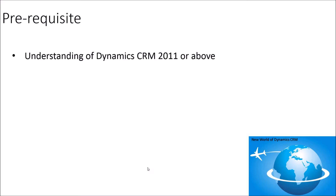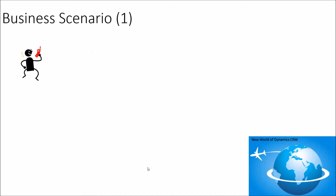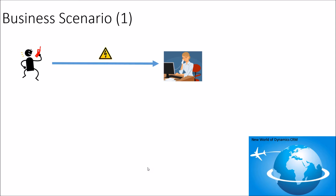Let's start with some business scenarios. In scenario one, there is a company that provides electricity services to a city. One day in some area there is a power outage, and a citizen calls the call center to report it. The call center agent creates a ticket so someone can go and fix the problem for that area.